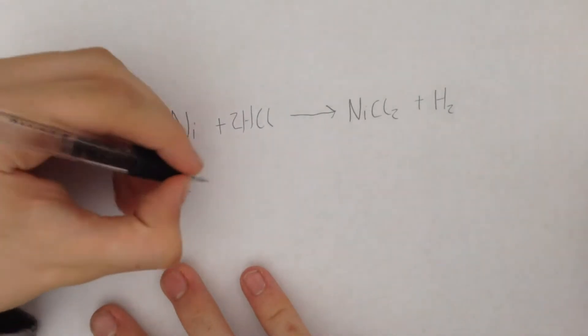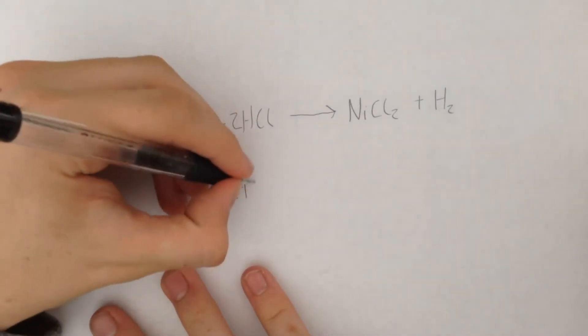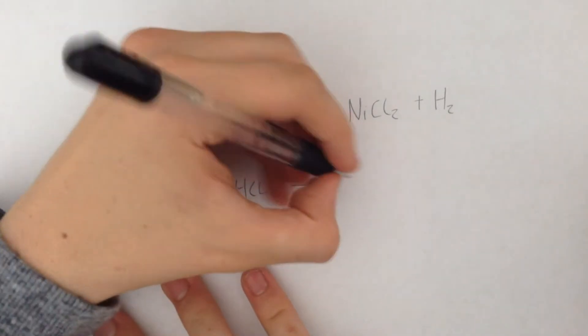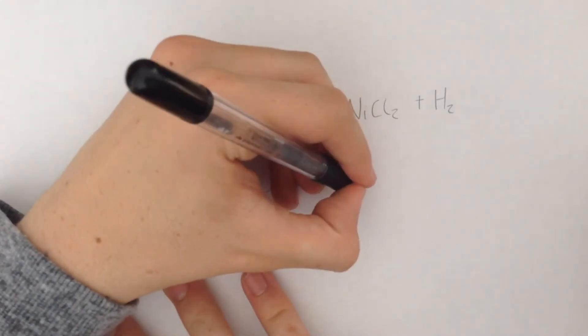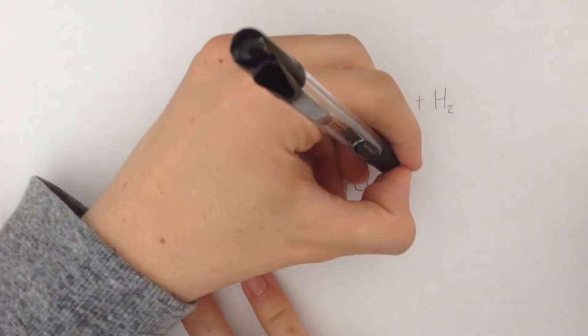The chromium does the same thing but reacts with the HCl to form chromium 3 chloride and once again hydrogen gas.